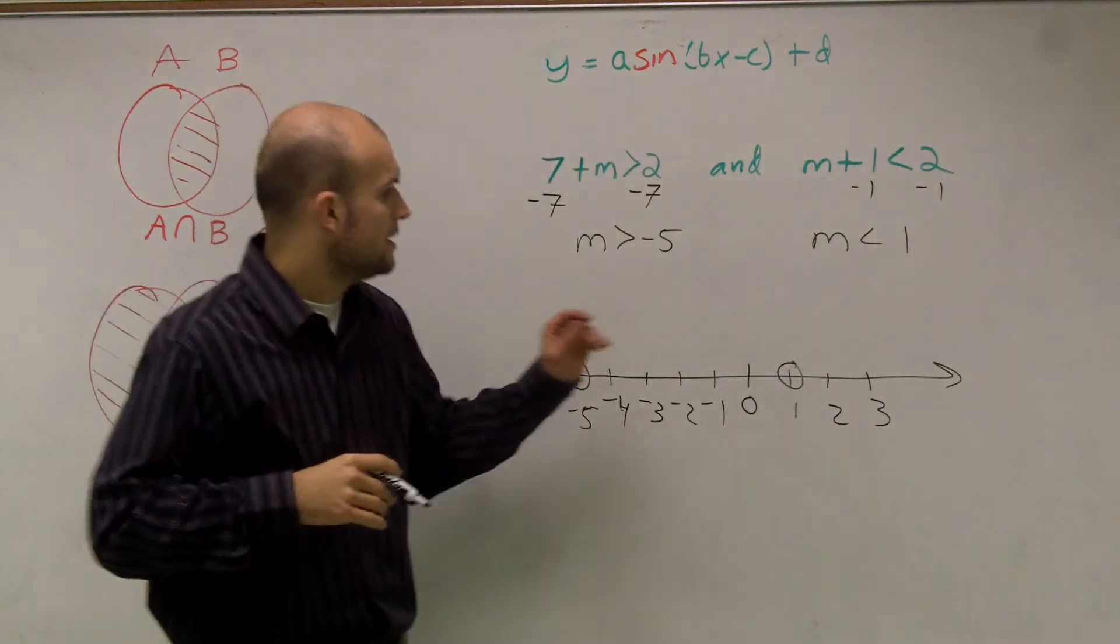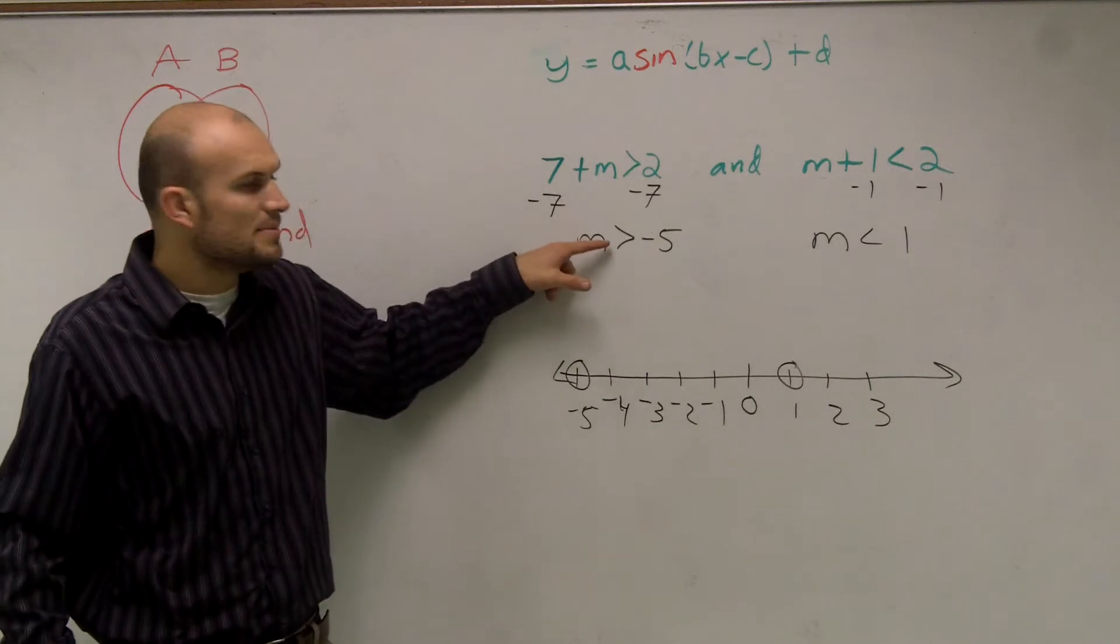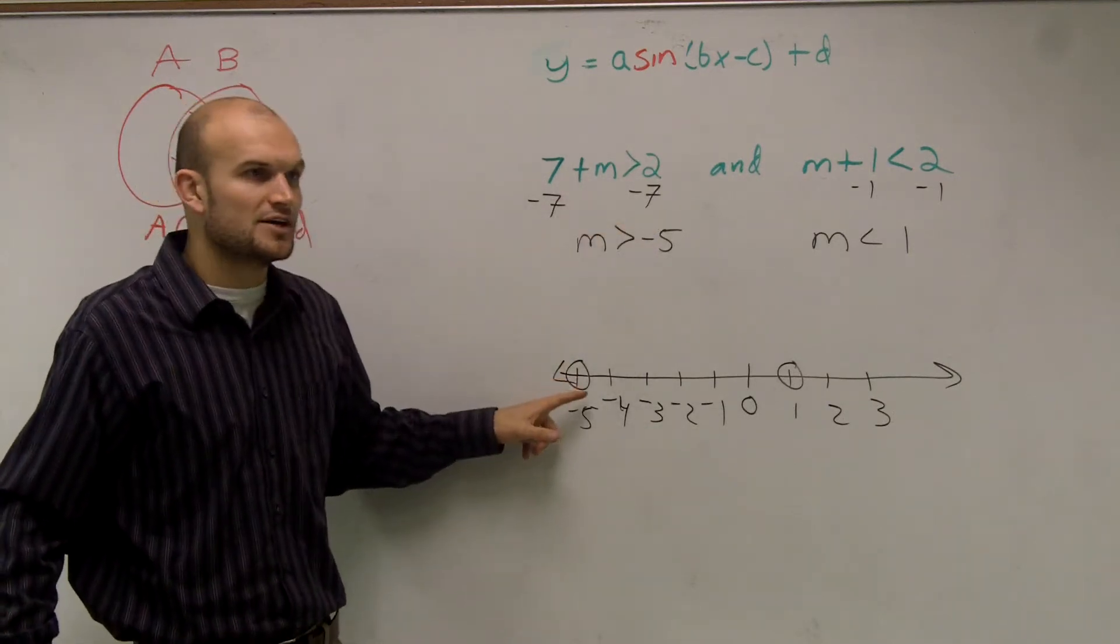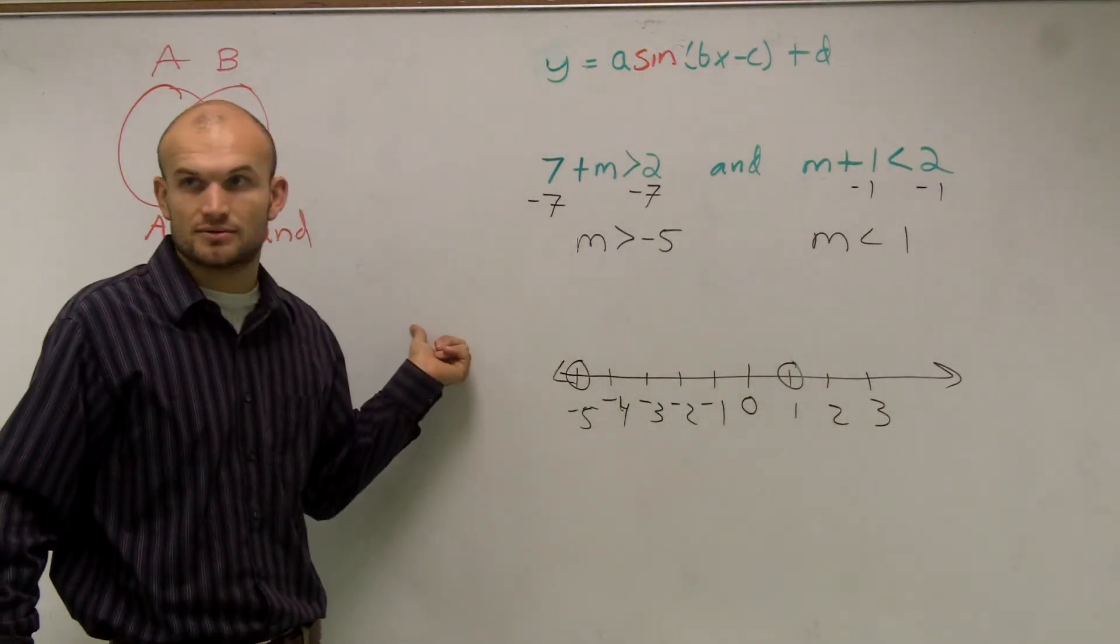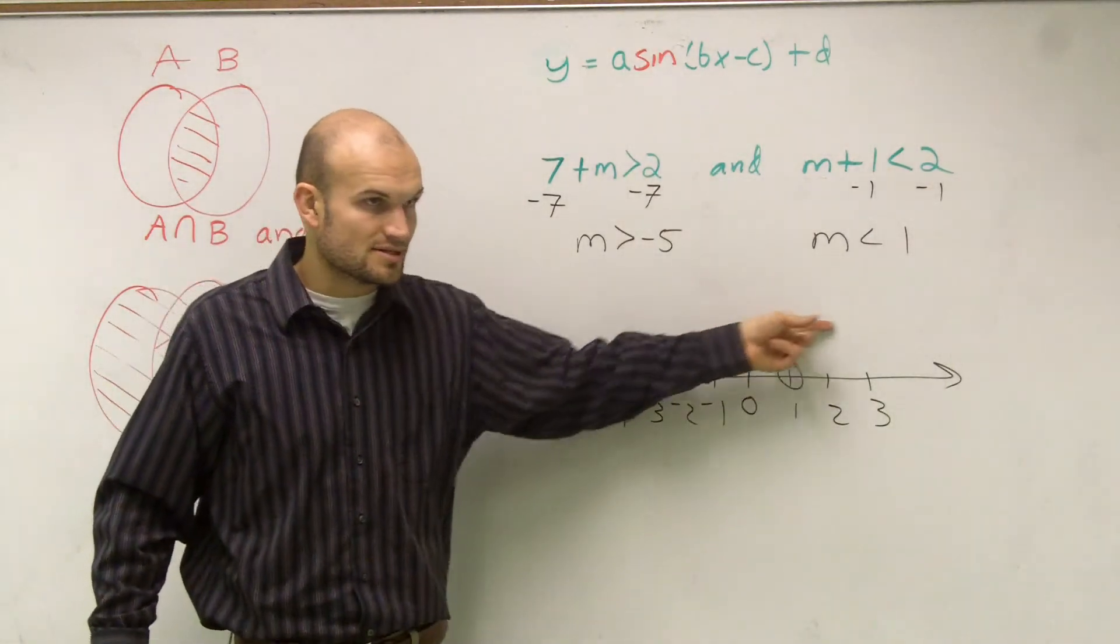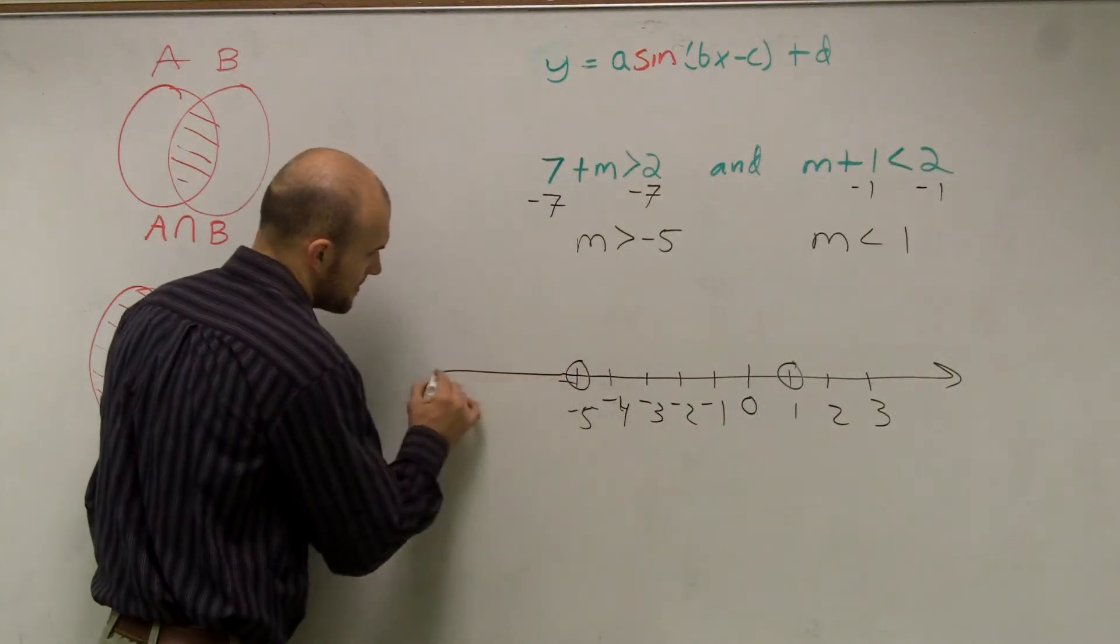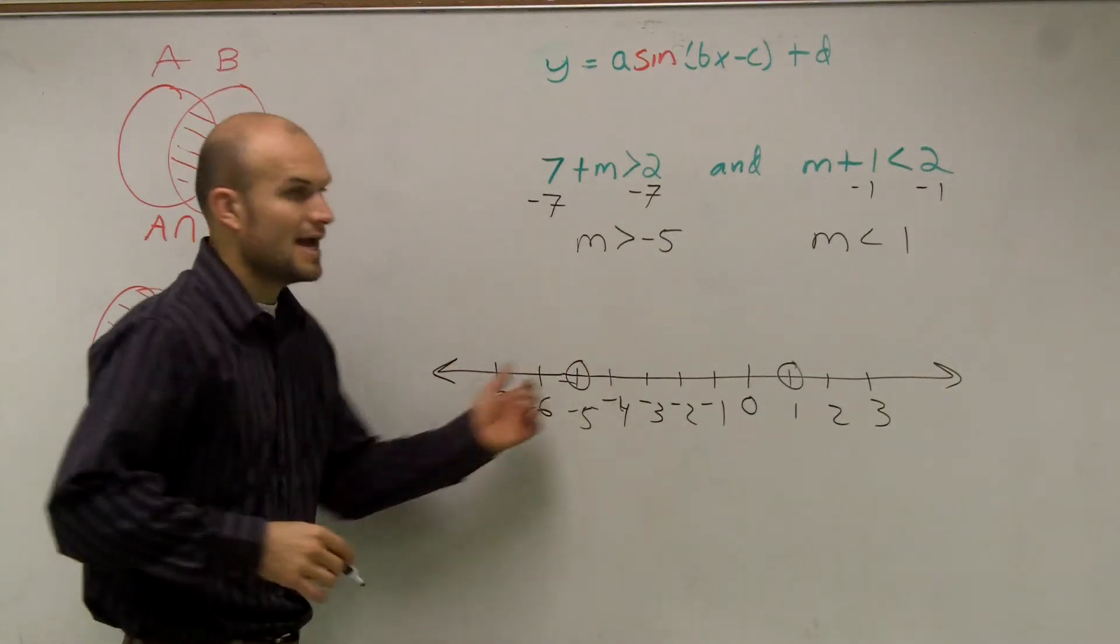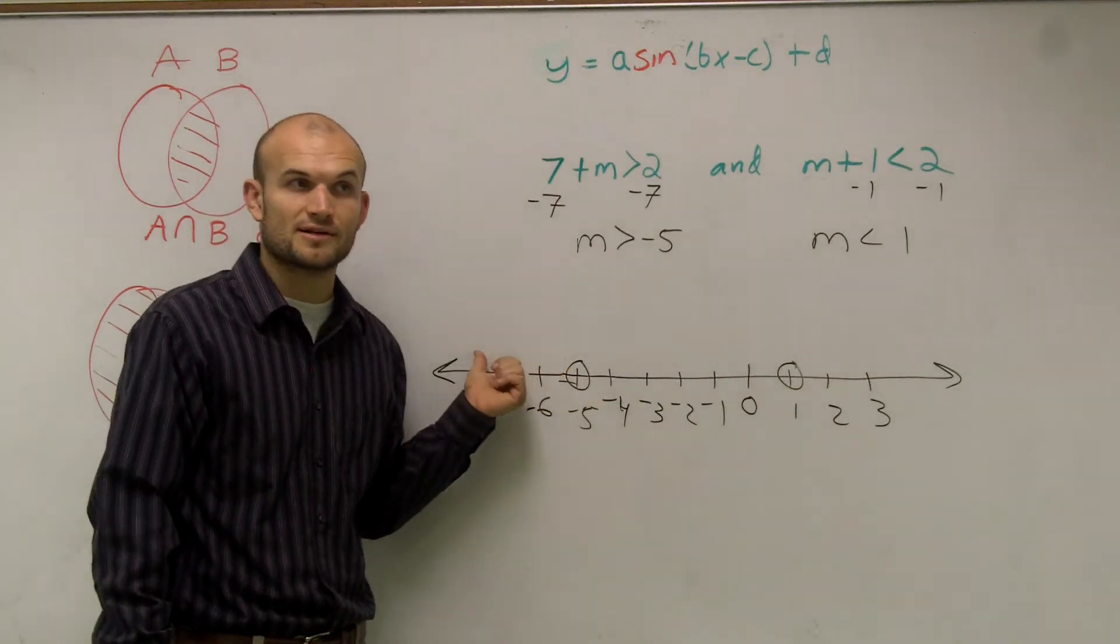Okay, so now what we need to do is just determine what do their graphs look like. M greater than negative 5 means the values that are greater than negative 5. So where are the values greater than negative 5? Are those going in that direction or are the numbers going in this direction? Well guys, what would be the next number? Negative 6, negative 7. As I'm going this way, are my numbers getting larger or smaller? They're getting smaller because they're more in the negative direction.